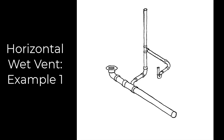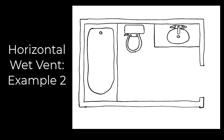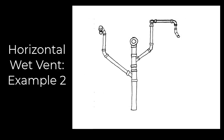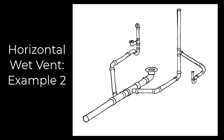Let's look at some examples with more fixtures — here we have a typical bathroom group for horizontal wet vent example two: a tub, a toilet, and a sink. We're going to use the sink drain as the horizontal wet vent and come towards the toilet, branching off with three-by-two Y's. First we branch off to the tub as we're coming towards the toilet, then we branch off to the lavatory, and that's going to be the vent for all of these fixtures.